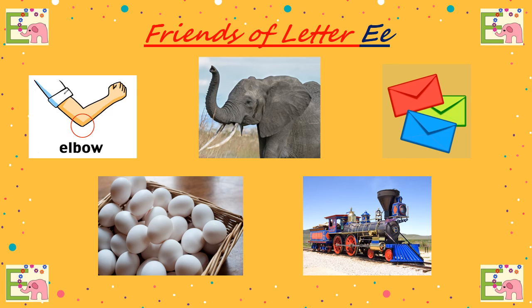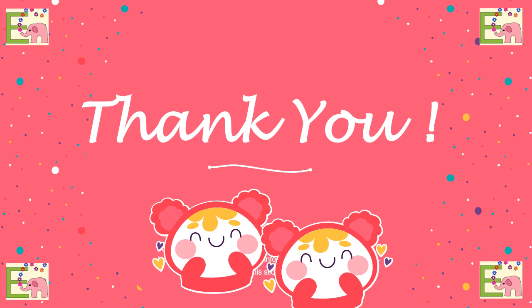Now we have friends of letter E: Elbow — we all have elbows, right? How many elbows do we have? Two on each hand. Elephant. Envelopes. Eggs. And engine. Now you have to find out some more words which start with letter E at your home and let us know next time. I hope you enjoyed this video and you learned a new letter which you are going to practice at home. Happy learning! Thank you!